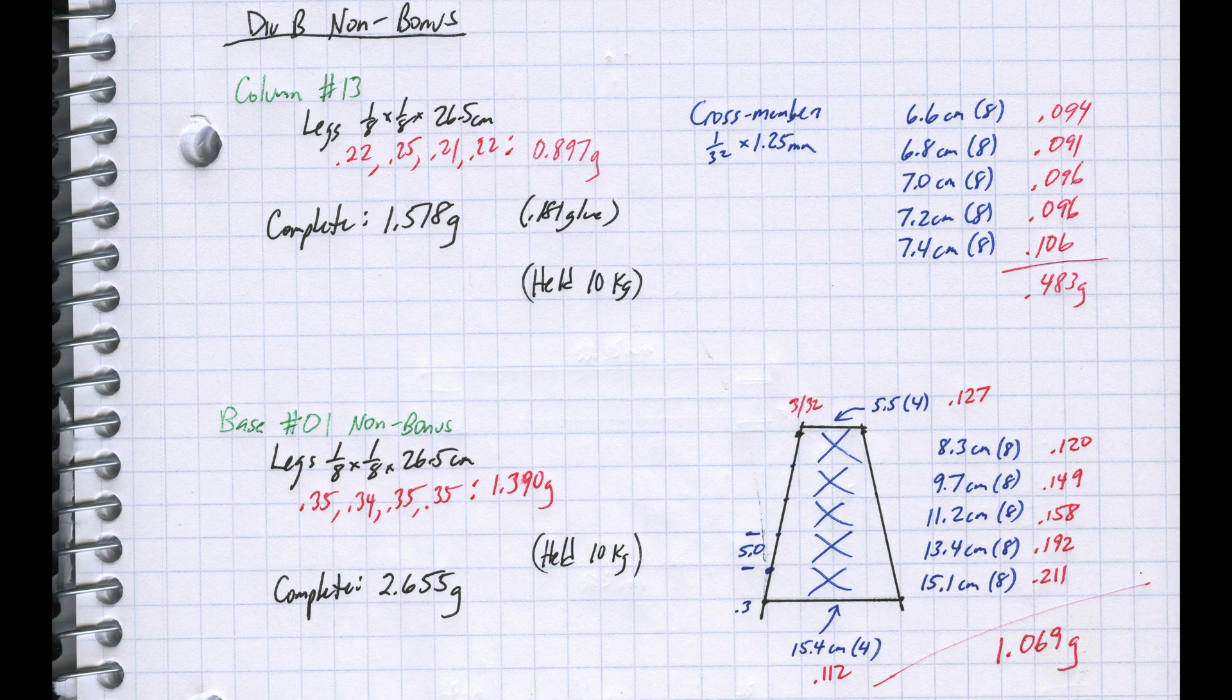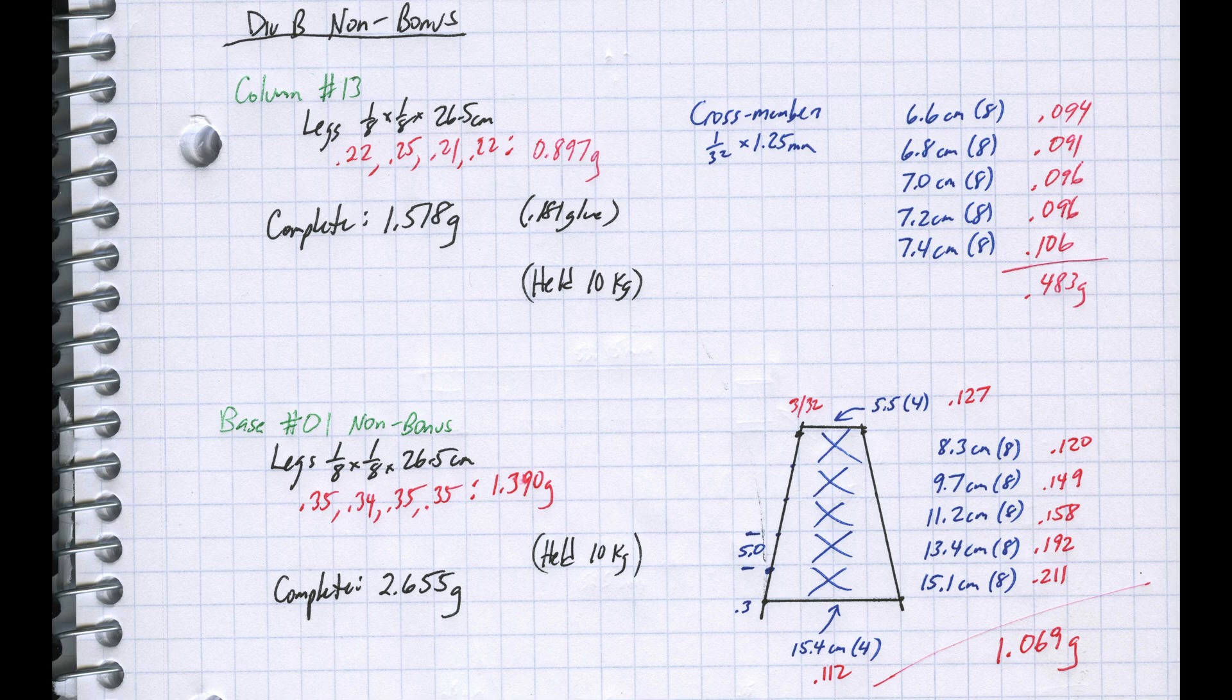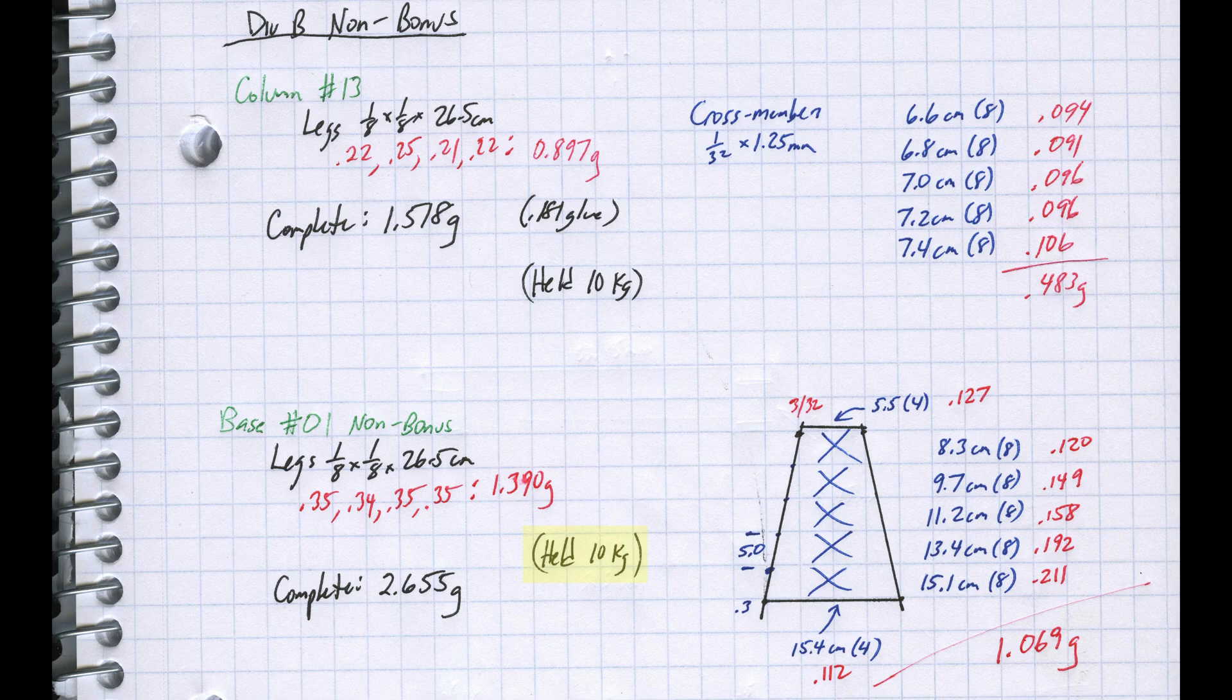Here are the details for the base. It is also the exact same basic design as my benchmark build. The big difference here is that all of the cross-members, including the horizontal piece at the bottom, used the same 1/32 inch by 1.25 millimeter balsa I cut for the column. I decided to use light 3/32 inch square balsa for the top horizontal pieces. You can see that all of the cross-member pieces, including the top and bottom horizontal piece, were 1.069 grams. The completed base was 2.655 grams. I also pre-tested this by itself to 10 kilograms to make sure there were no problems with the build or unexpected failures.